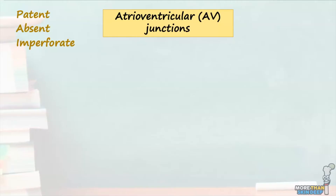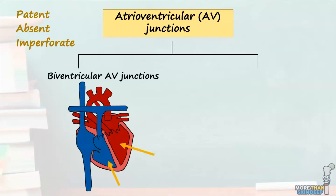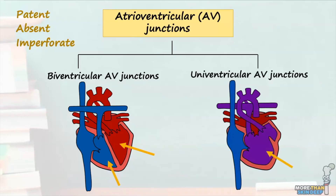The atrioventricular junctions can be broadly divided into either biventricular or univentricular AV junctions. Biventricular AV connections develop when each AV valve drains into one underlying ventricle to produce a biventricular circulation. In this image we can see two ventricular chambers separated by a ventricular septum. The AV junctions can also be univentricular, where either one or both of the AV junctions are connected to one dominant ventricle. Although the term univentricular would suggest the presence of only one ventricle, most hearts considered univentricular do in fact possess two ventricles; however the second ventricle is often hypoplastic and considerably smaller.